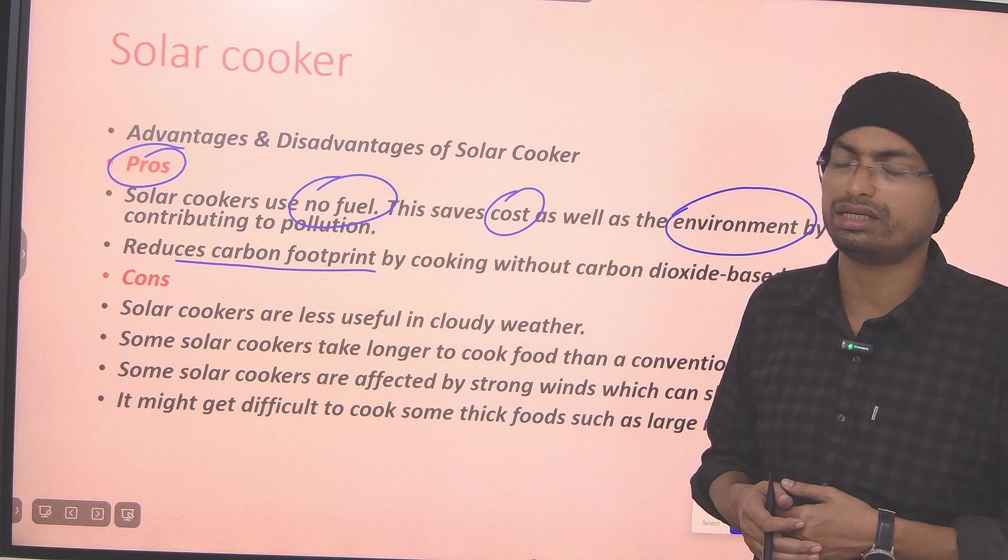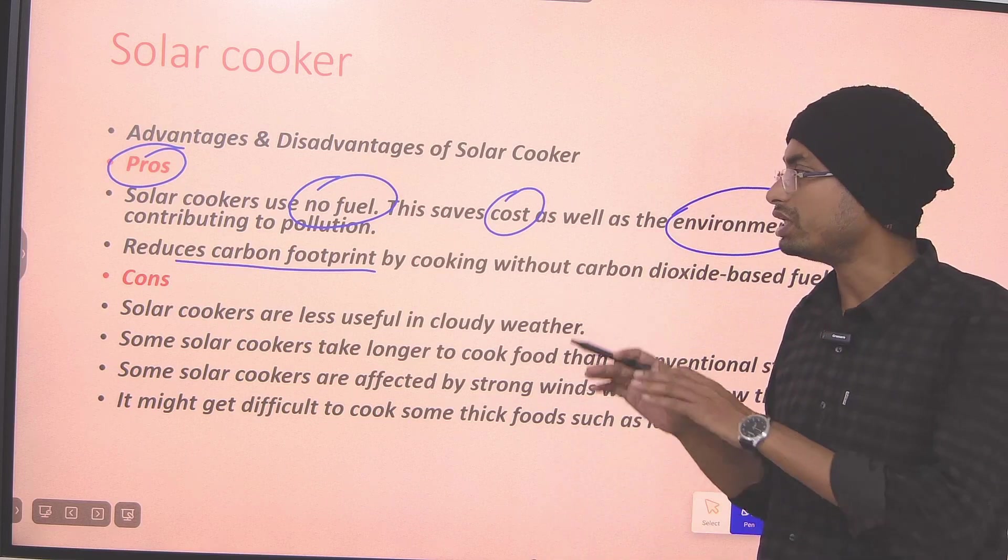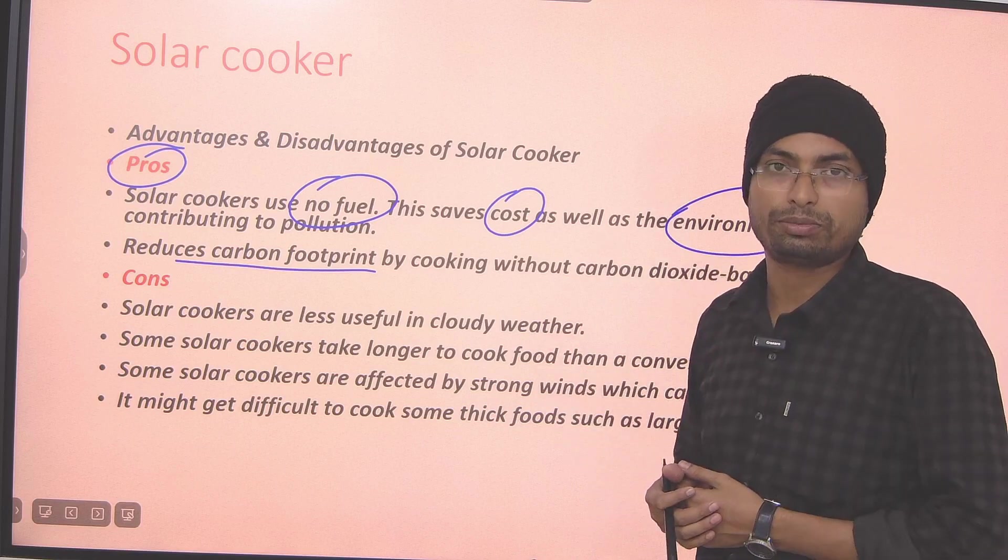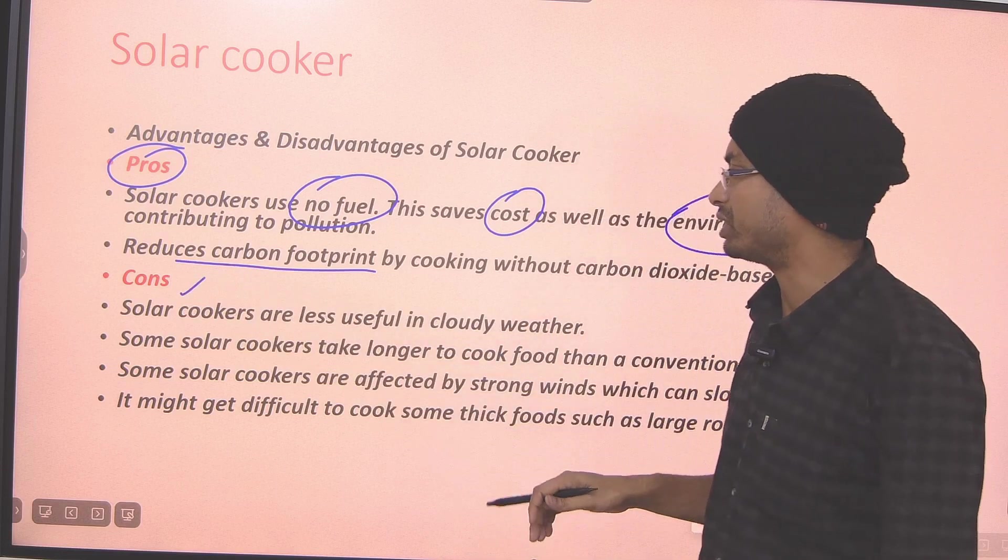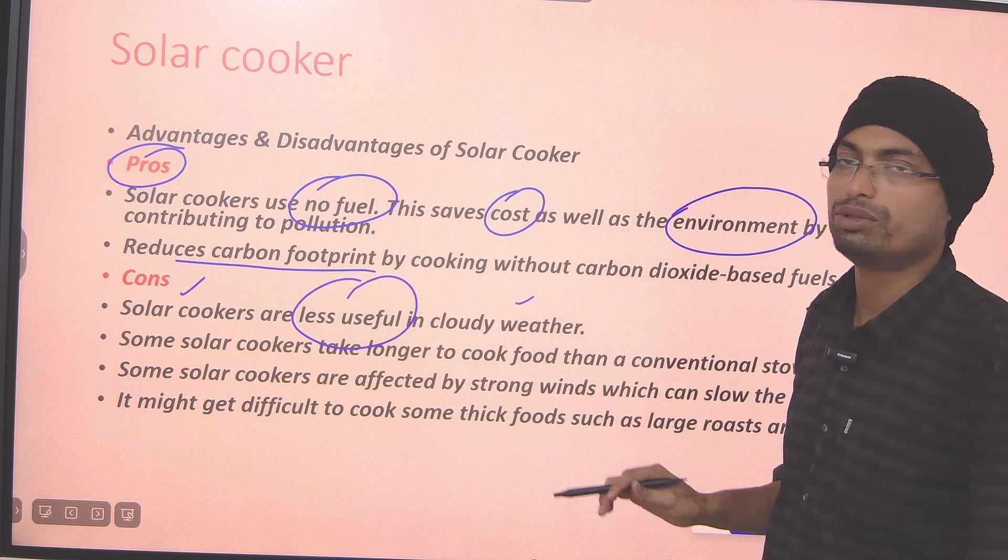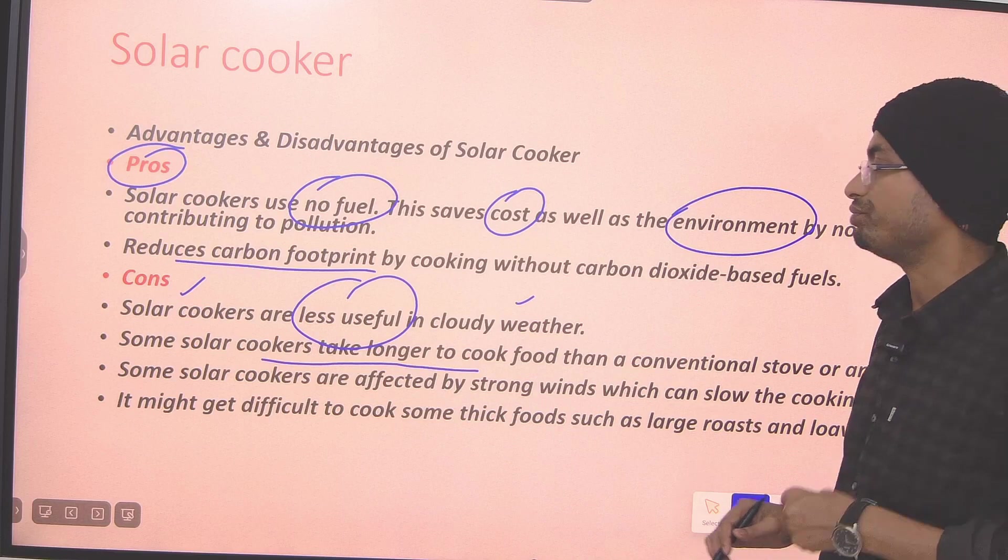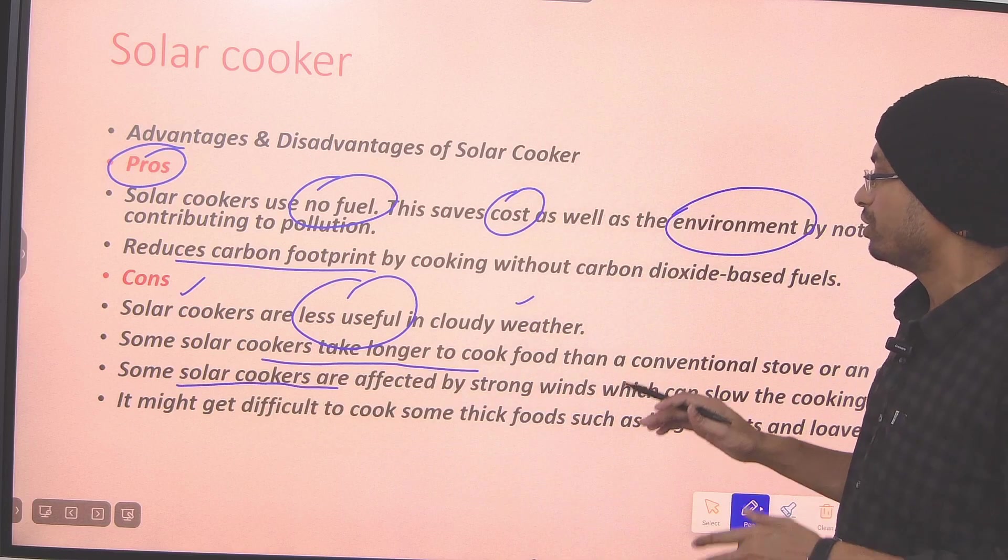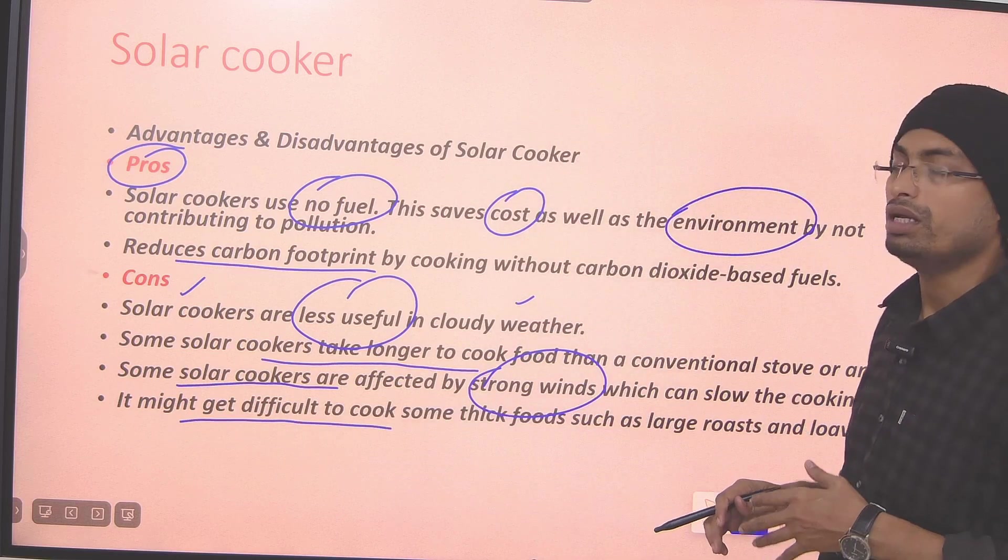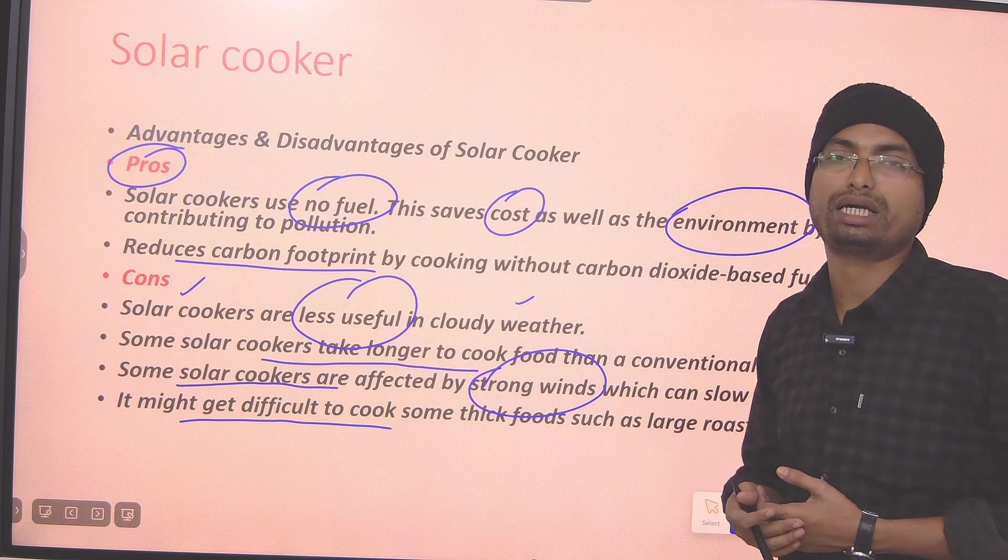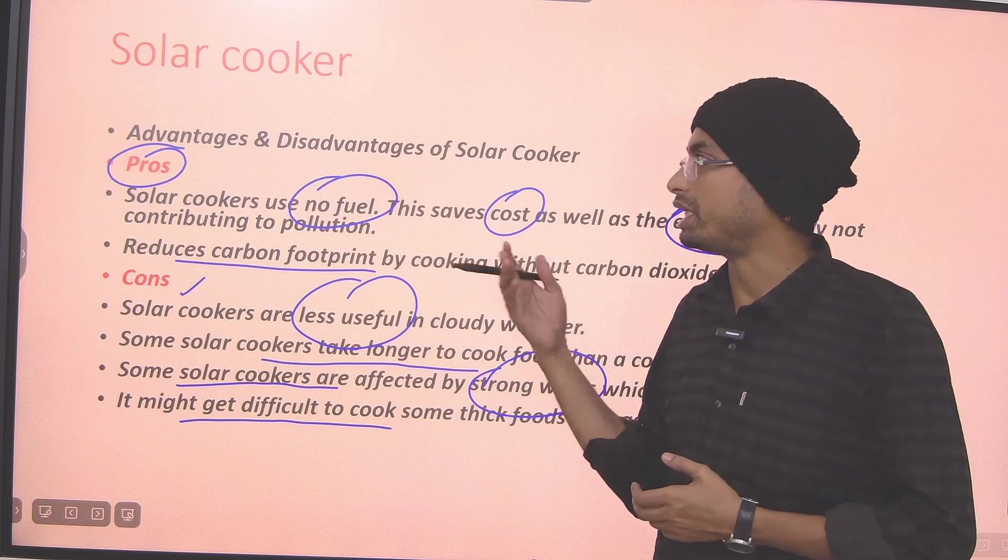We can't fry chicken with a solar cooker, because the temperature rises slowly and takes time to reach cooking level. Now, in terms of cons, it is less useful in cloudy weather. It takes a long time for cooking food. Again, solar cookers are affected by strong winds. And then, it is difficult for us to cook certain types of food. This is solar cooker's construction, working, and advantages and disadvantages.